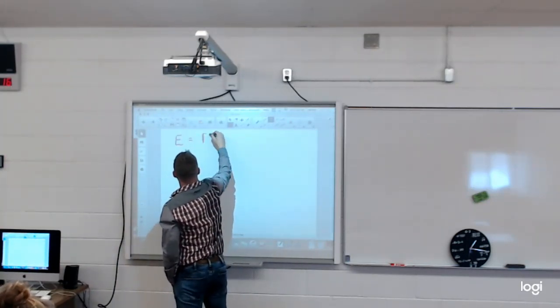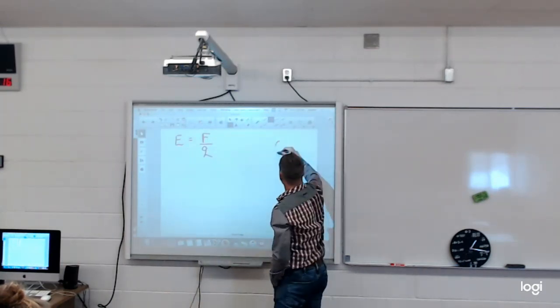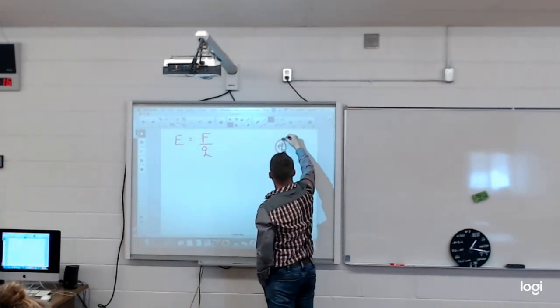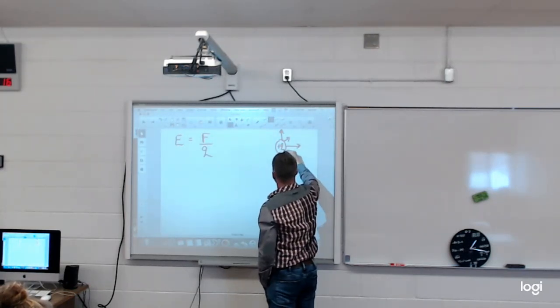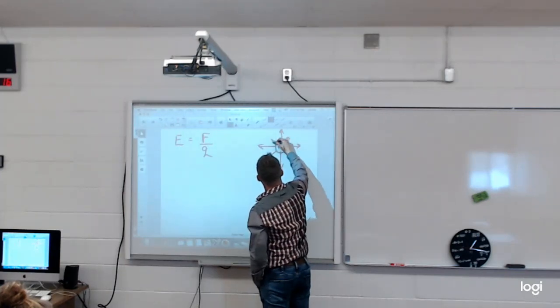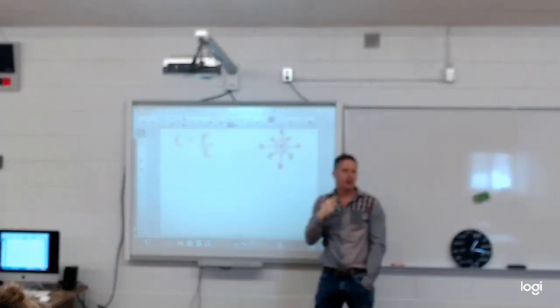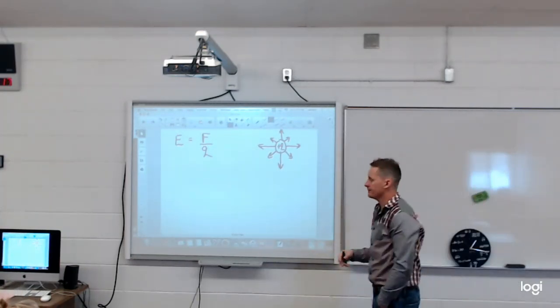And electric field intensity was how strong is that field around my point charge. So depending on how big that charge was and the amount of force around it, we can calculate what the electric field intensity was around that point charge.